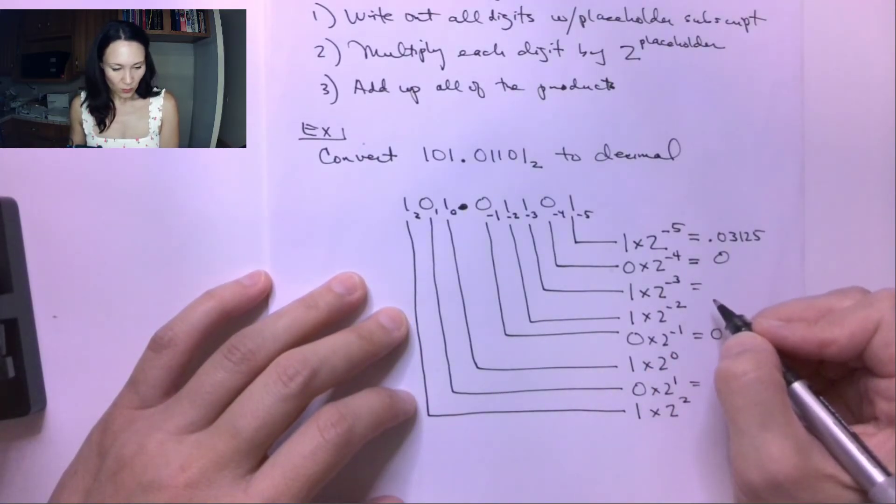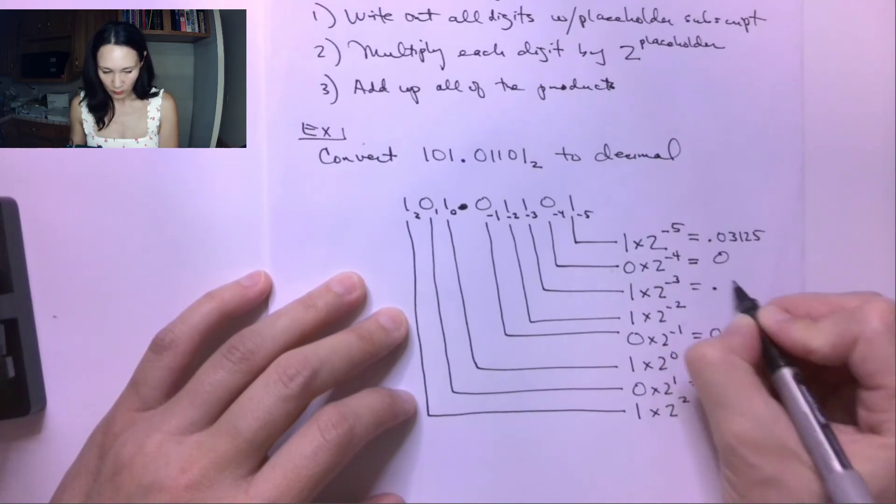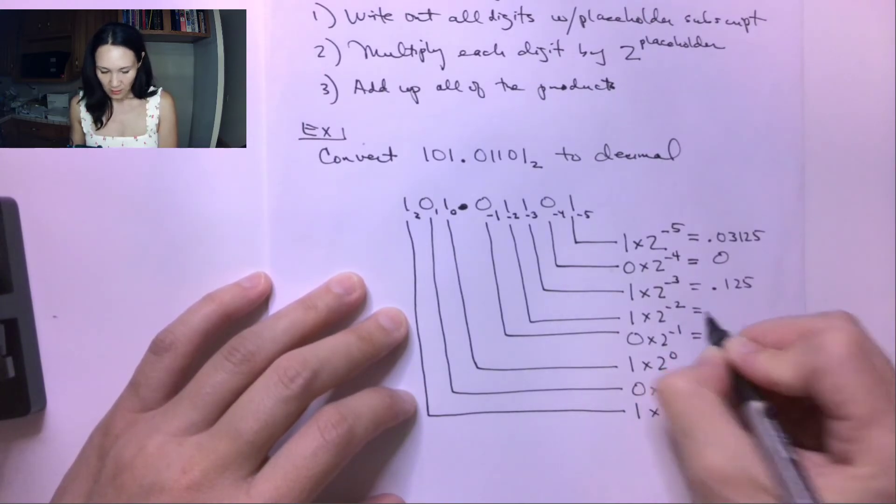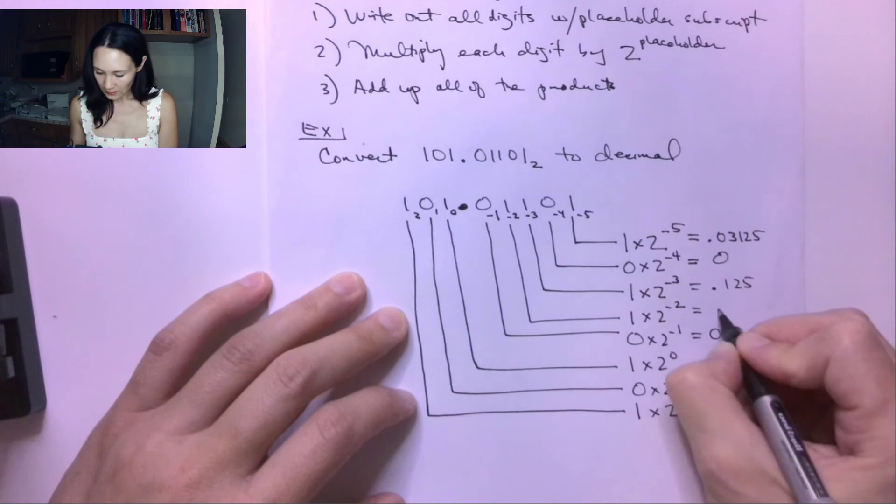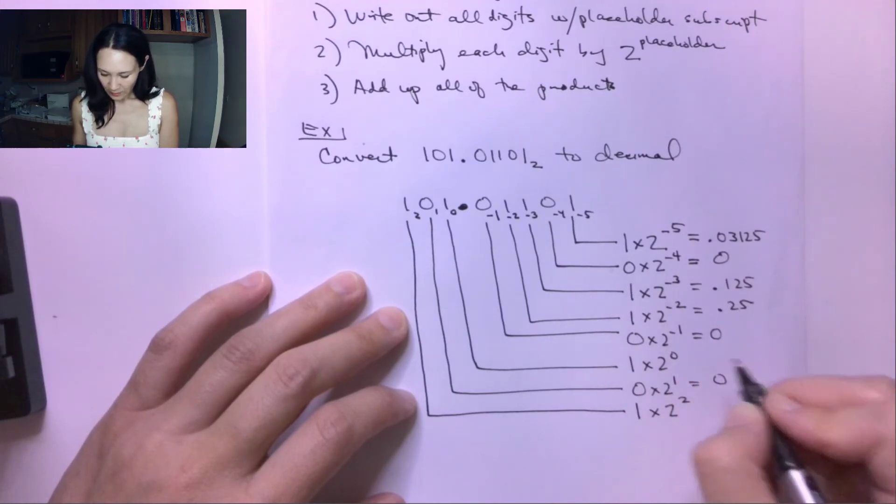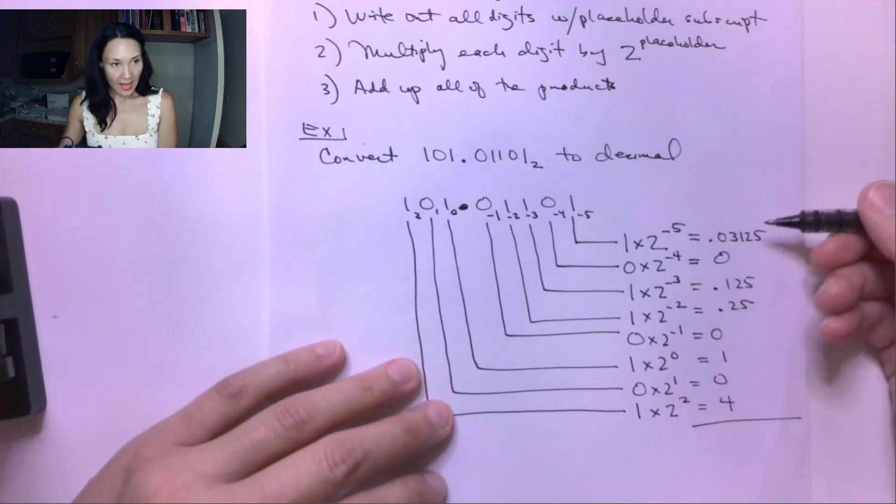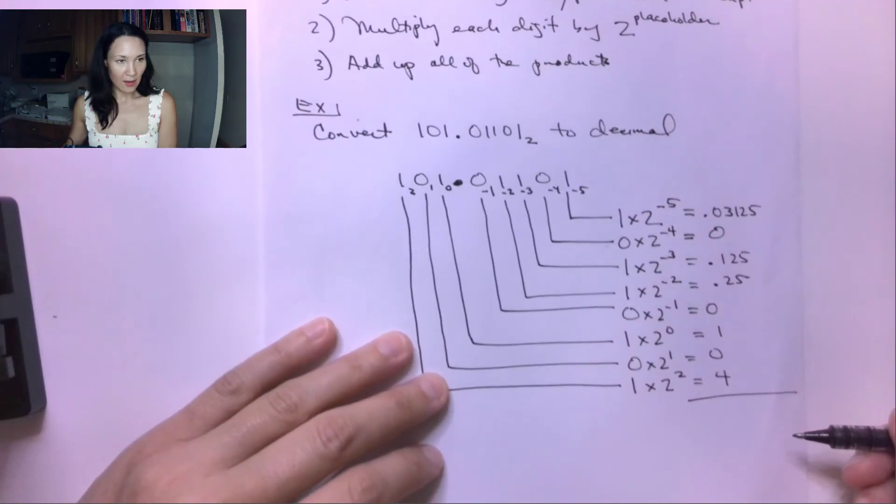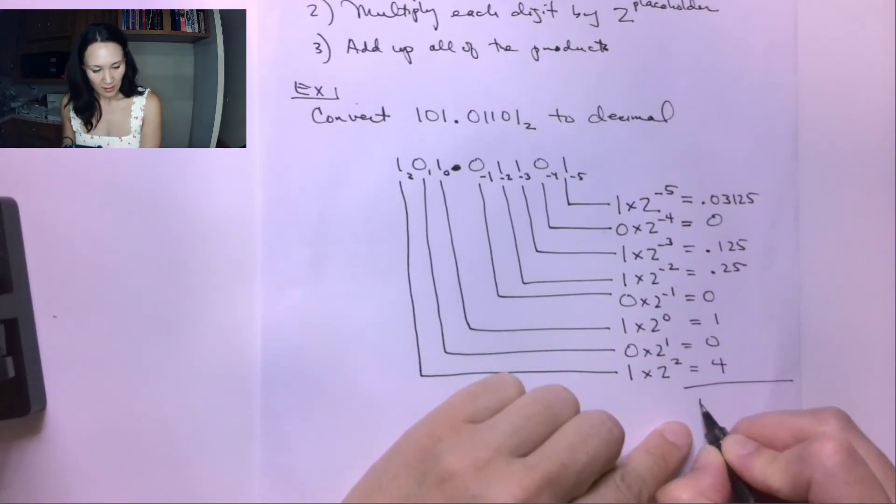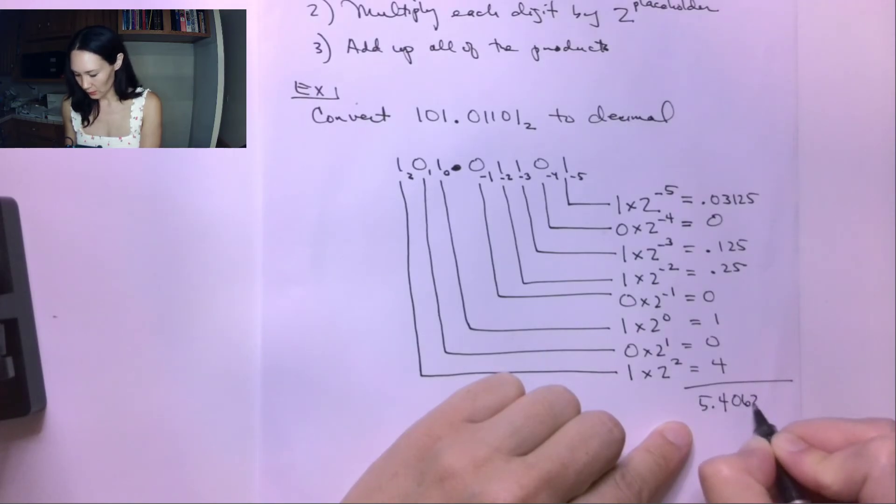The next one is 1 times 2 to the negative 3 gives us 0.125. 1 times 2 to the negative 2 gives us 0.25. This is just going to be 1. And 1 times 2 squared is 4. Therefore, now I add up all these products straight down, and this is going to give me 5.40625.